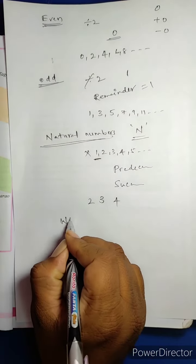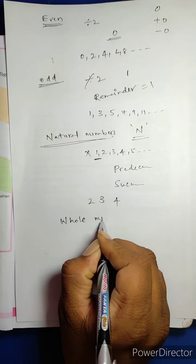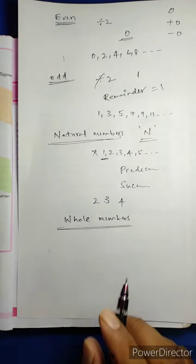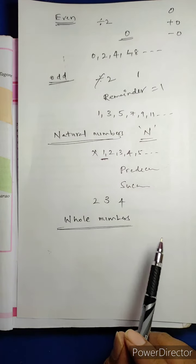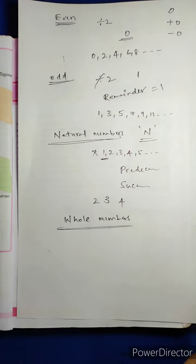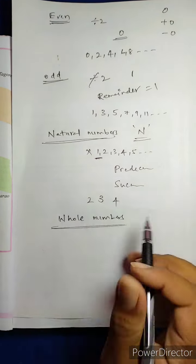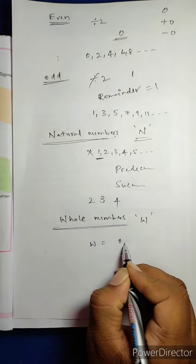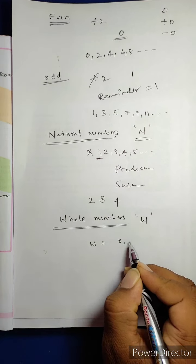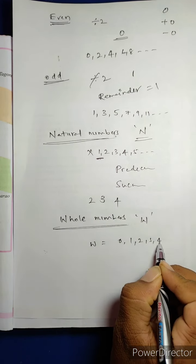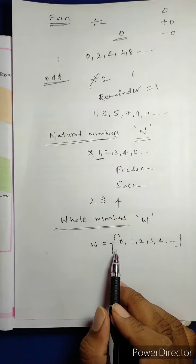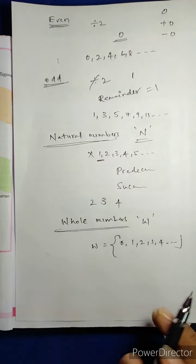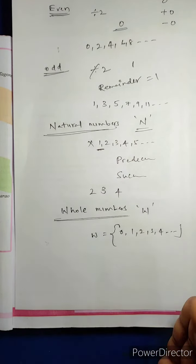Then next, what is meant by Whole Numbers? The set of natural numbers including 0 is called Whole Numbers. Whole Numbers include natural numbers along with 0. Whole numbers are denoted by W. The set of whole numbers is {0, 1, 2, 3, 4, and so on}. The smallest whole number is 0 and the biggest whole number is infinite.